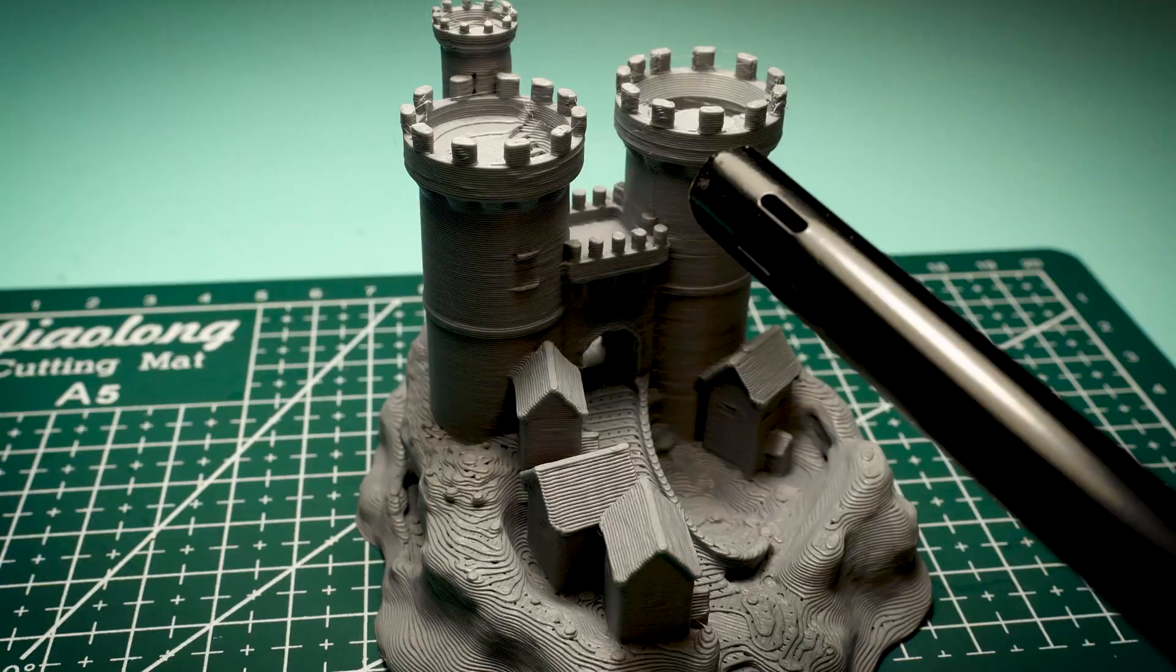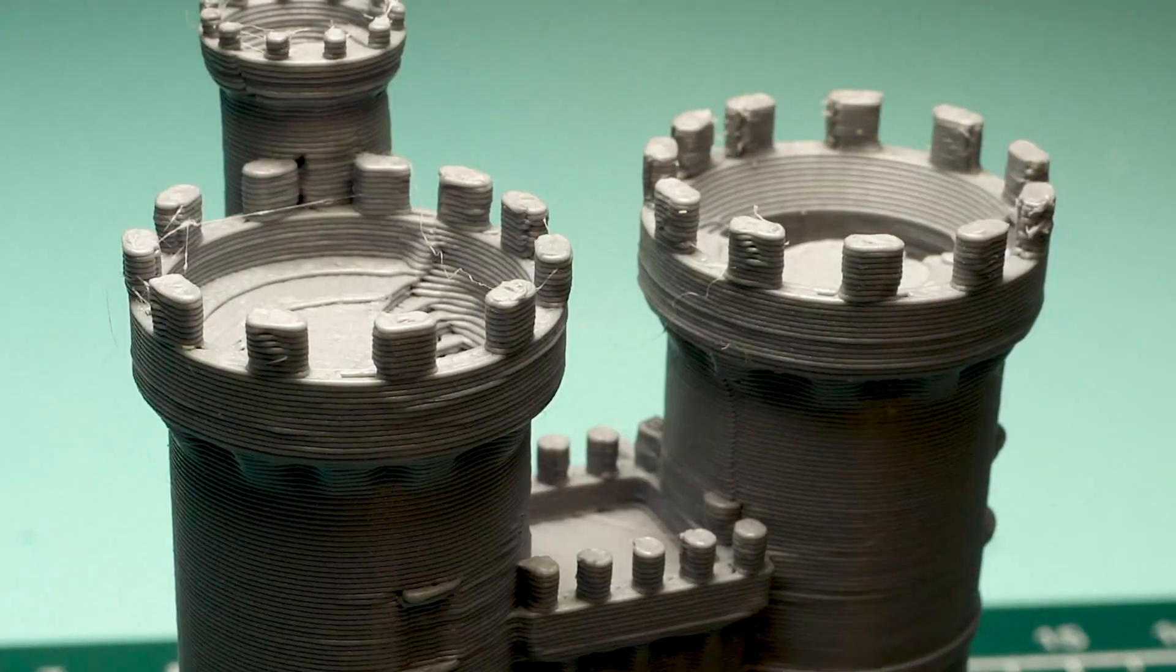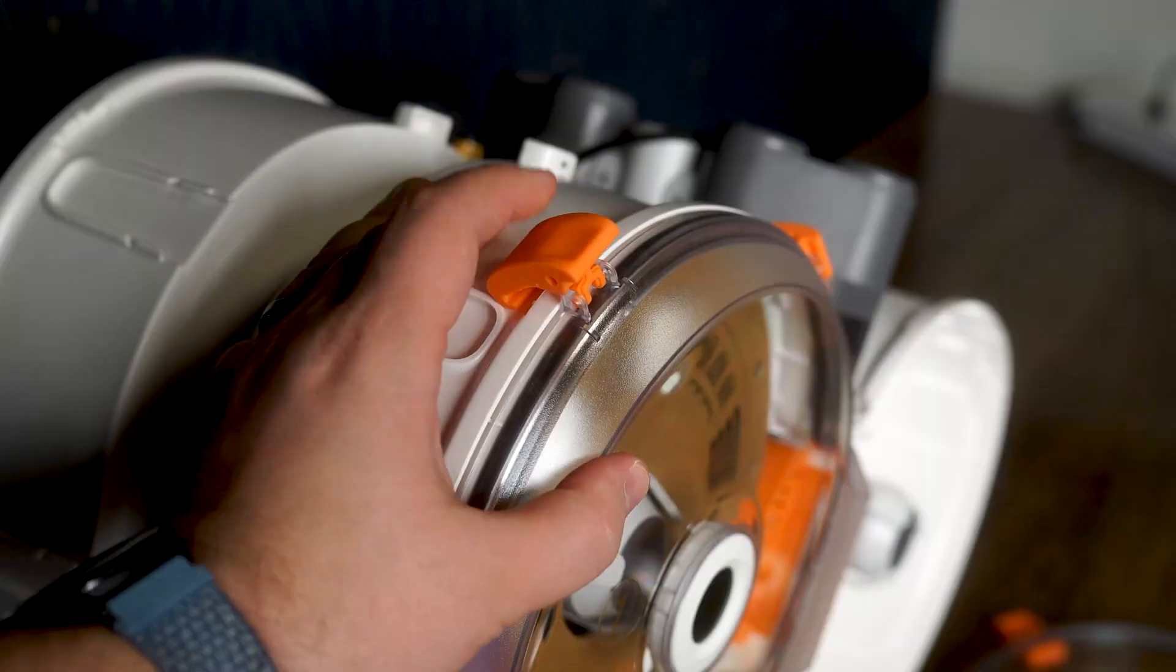Excessive stringing, weak prints, and uneven extrusion—all problems associated with filament absorbing moisture from the air. This is where the enclosure for AMS Light will come to the rescue.